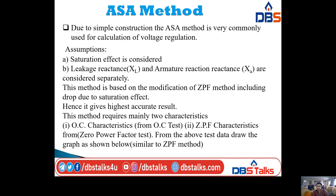The ZPF method includes the drop due to saturation effect, hence it gives the highest accurate result. The ASA method requires mainly two characteristics similar to the ZPF method: the OCC characteristics from the open circuit test and ZPF characteristics from the zero power factor test. From this test data, a characteristic diagram can be drawn consisting of the OCC curve and ZPF curve, with the Poitier triangle in between.